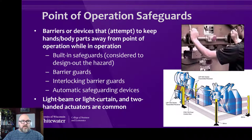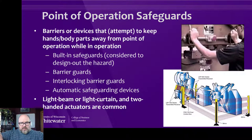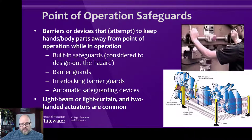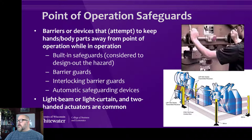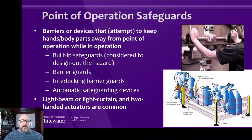If you've seen the movie 8 Mile with Eminem, he's using a two-hand actuator and it's a two-person job. Both people have to depress all the buttons at the same time for the press to come down and form the part — it's cold metal bending. We'll get into those machines later.